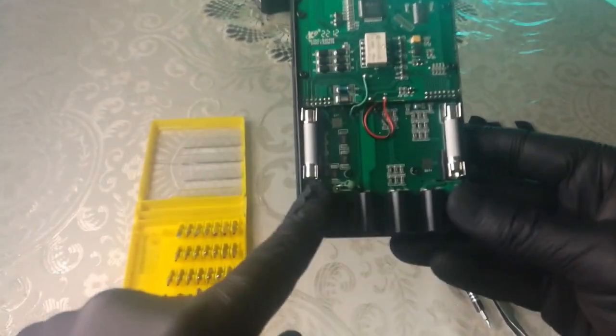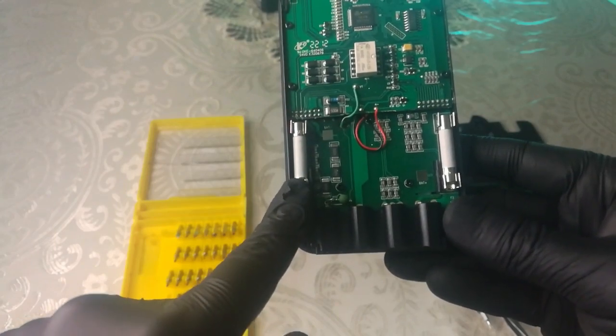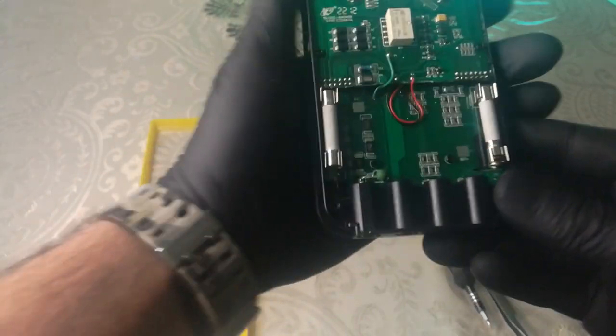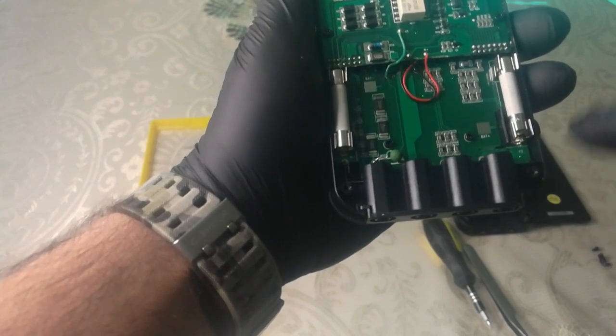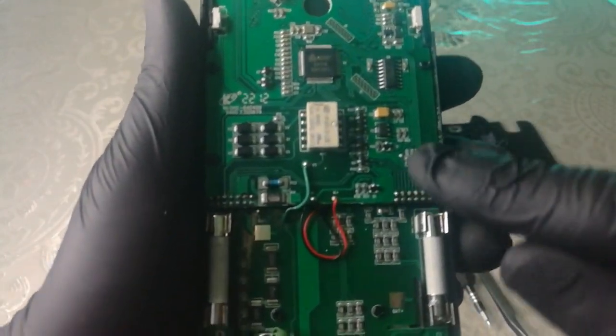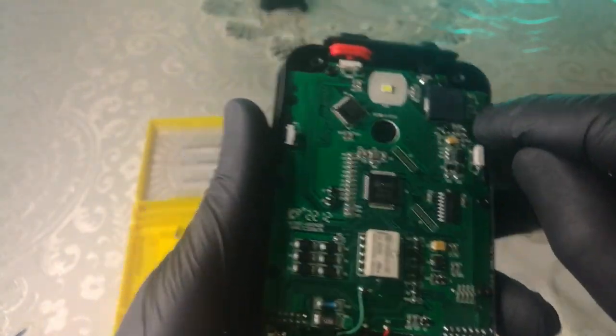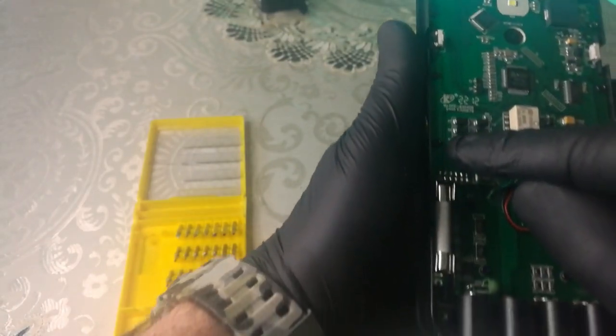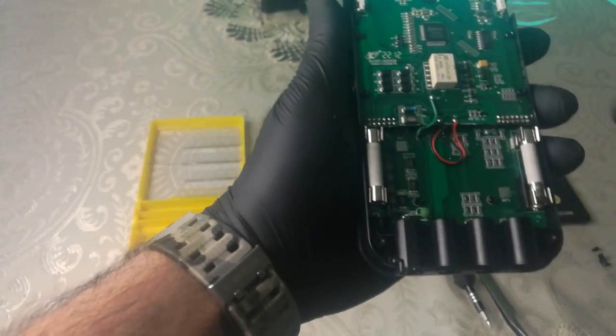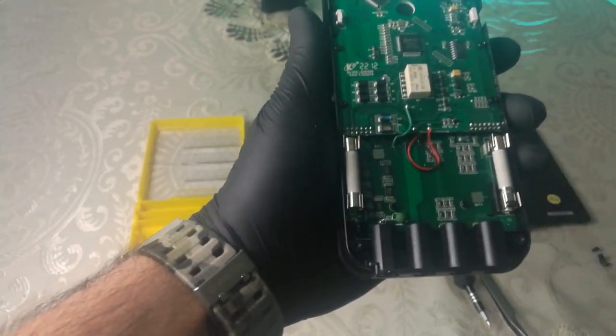This one is a 10 amp 250 volt fuse, and this one is a 600 milliamp 250 volt fuse. There are some screws that attach the motherboard to the multimeter's main case. Here is number one, two, three, four, five, six, seven, eight, nine, and ten.